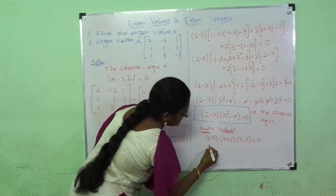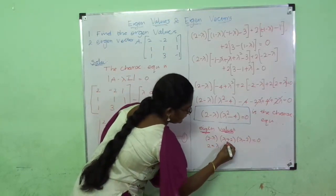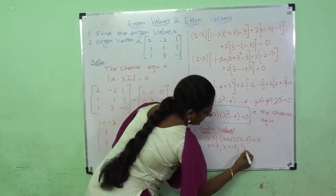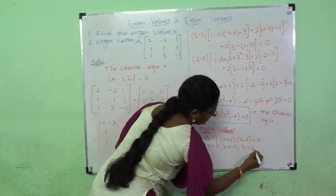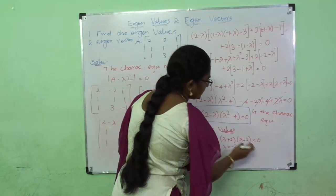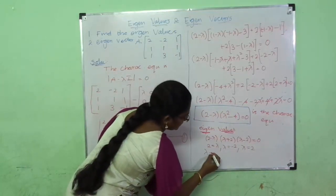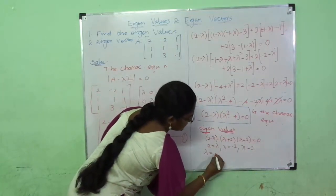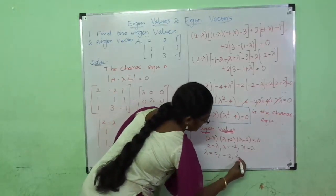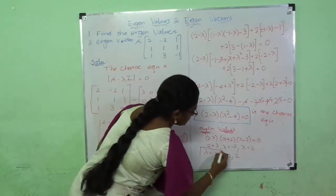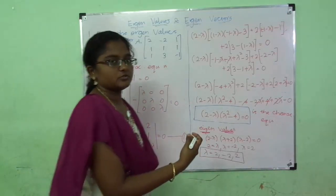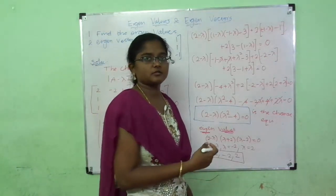The roots are: λ = 2 (from 2-λ = 0), λ = -2 (from λ+2 = 0), and λ = 2 (from λ-2 = 0). So the eigenvalues are λ = 2, -2, and 2. From these eigenvalues we will find the eigenvectors in the next video.